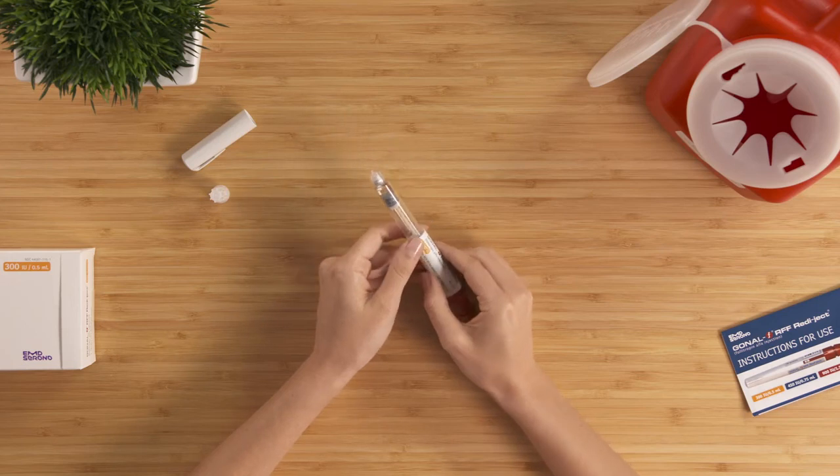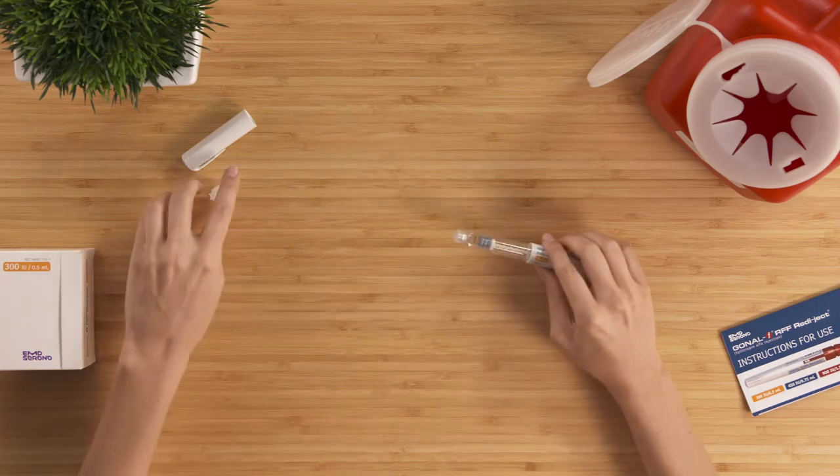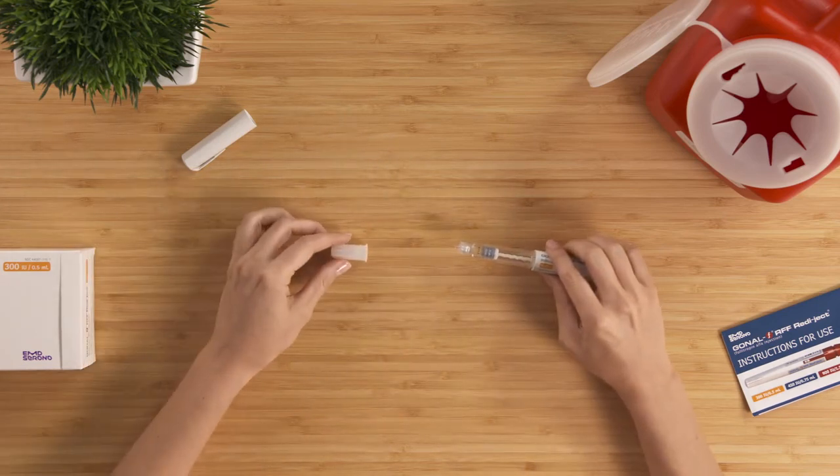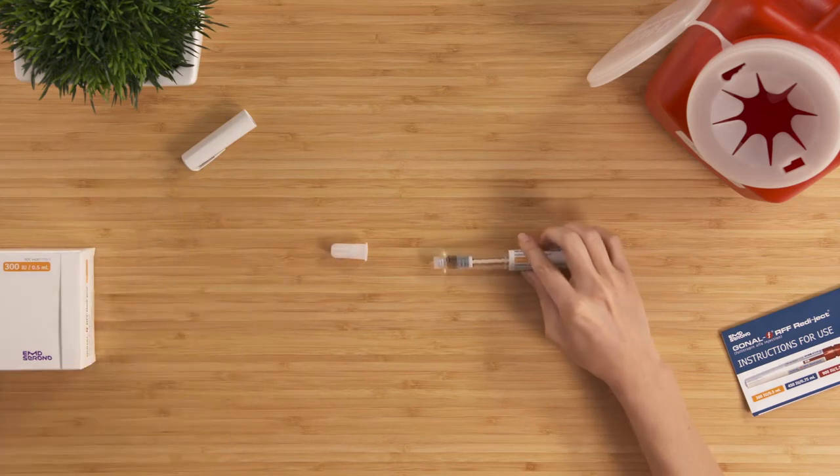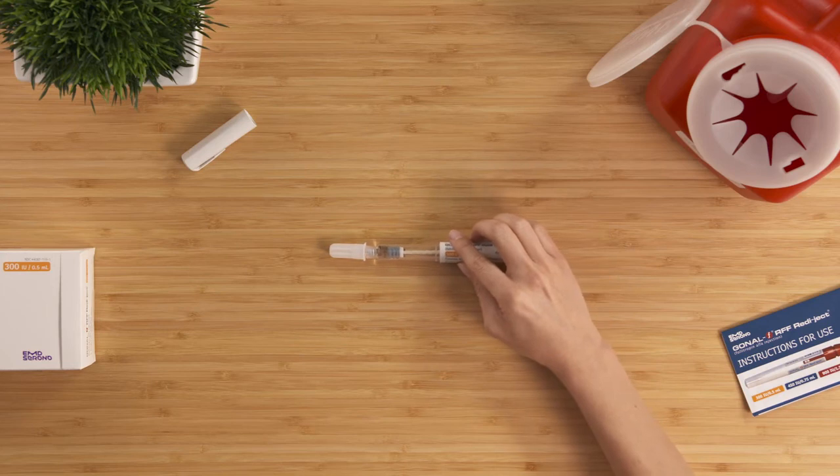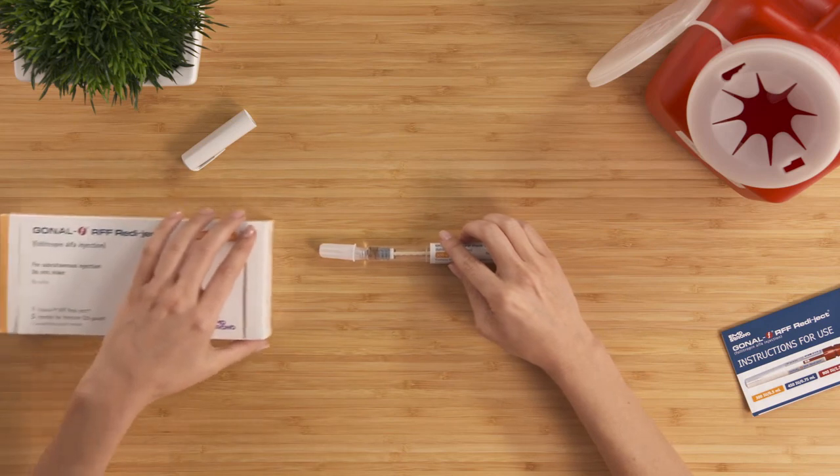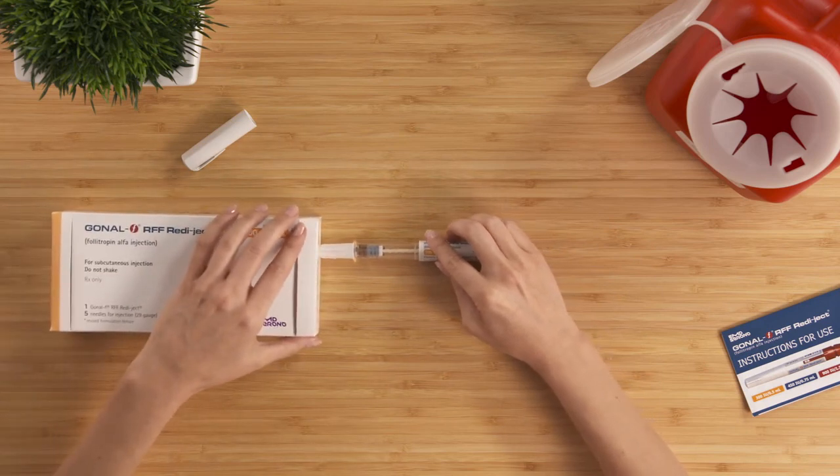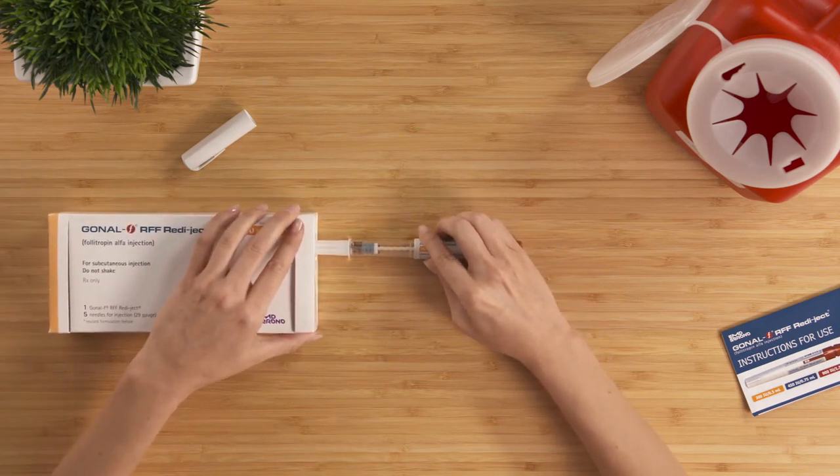I'll talk you through this step as I demonstrate. Lay the outer needle cap on its side on a flat surface. Then, hold the pen with the needle attached in one hand, and slip the needle into the outer needle cap without using your other hand. Push the capped needle against a firm, vertical surface, like the carton or a wall, until you hear a click.